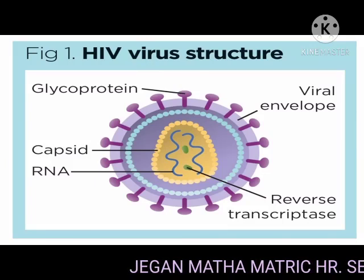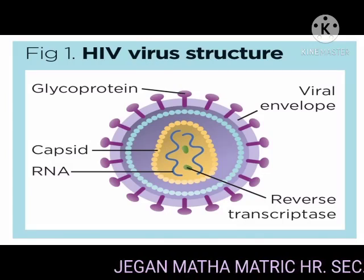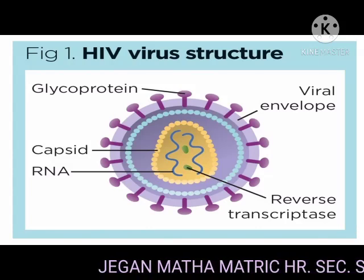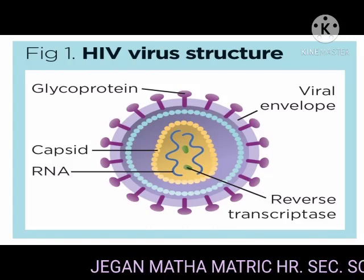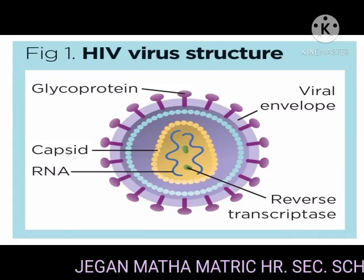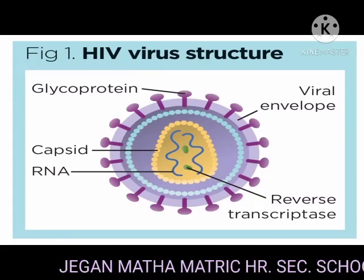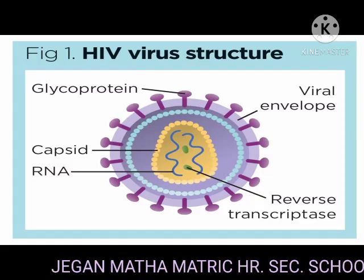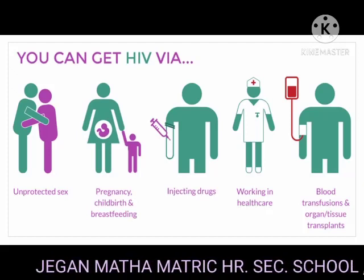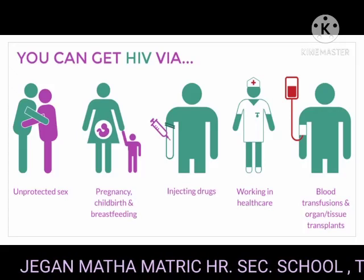AIDS — Acquired Immunodeficiency Syndrome — is caused by a retrovirus. It is an RNA virus known as Human Immunodeficiency Virus (HIV). The virus attacks the white blood cells or lymphocytes and weakens the body's immunity or self-defense mechanism. It is transmitted through sexual contact from an infected person to a healthy person.